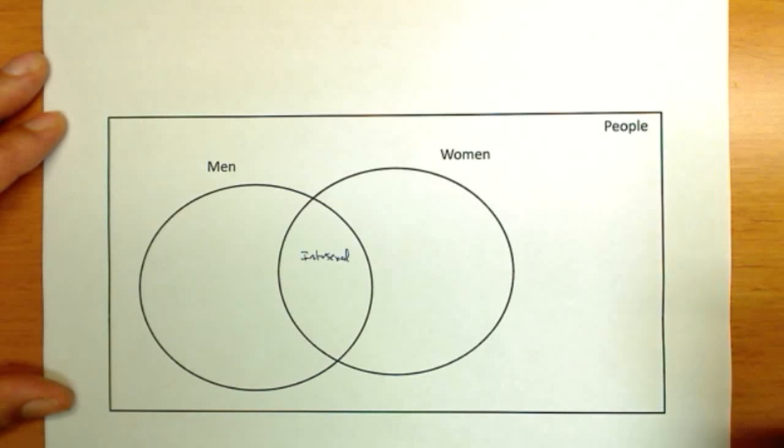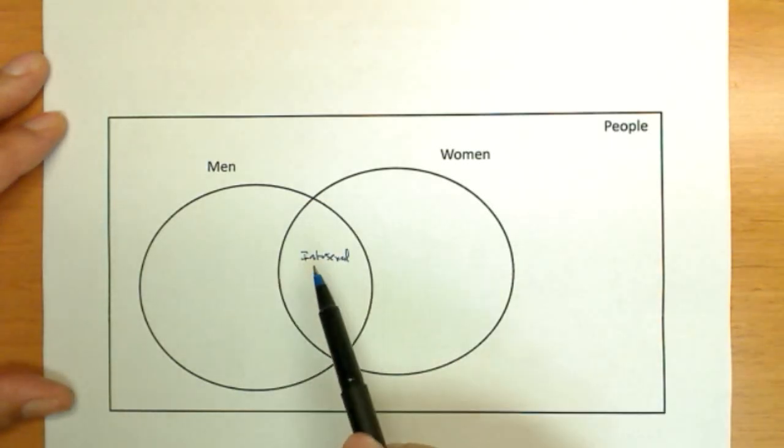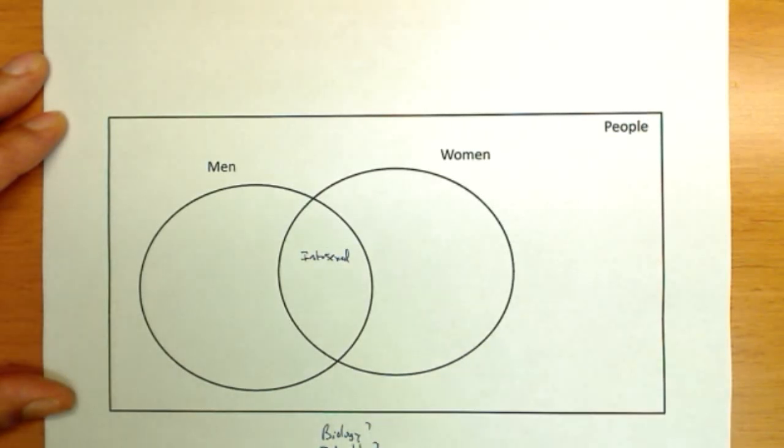However, it is worth discussing. This group here would have characteristics of both, and we'd have to be very careful in our definitions. Are we just talking about biology, or are we talking about how people identify themselves? So the question would require a very careful definition of our terms.